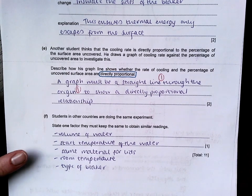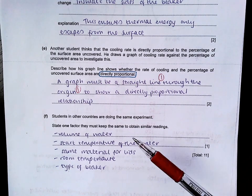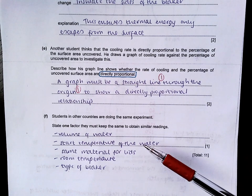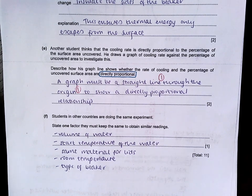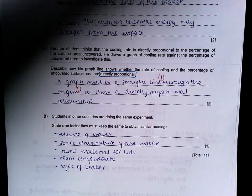Students in other countries in F are doing the same experiment. State one factor they must keep the same to obtain similar readings. We want to keep the volume of water the same, the start temperature of the water the same, the same material for the lids needs to be used, the room temperature being used, the type of beaker. All possibilities there for one mark.